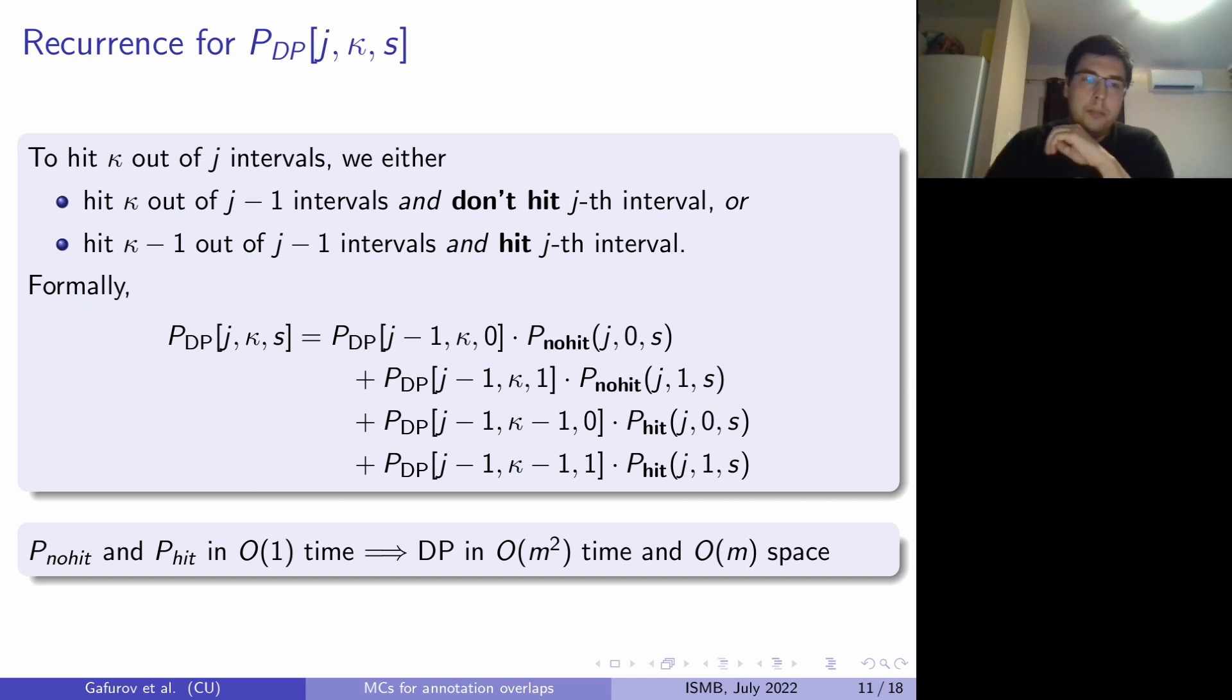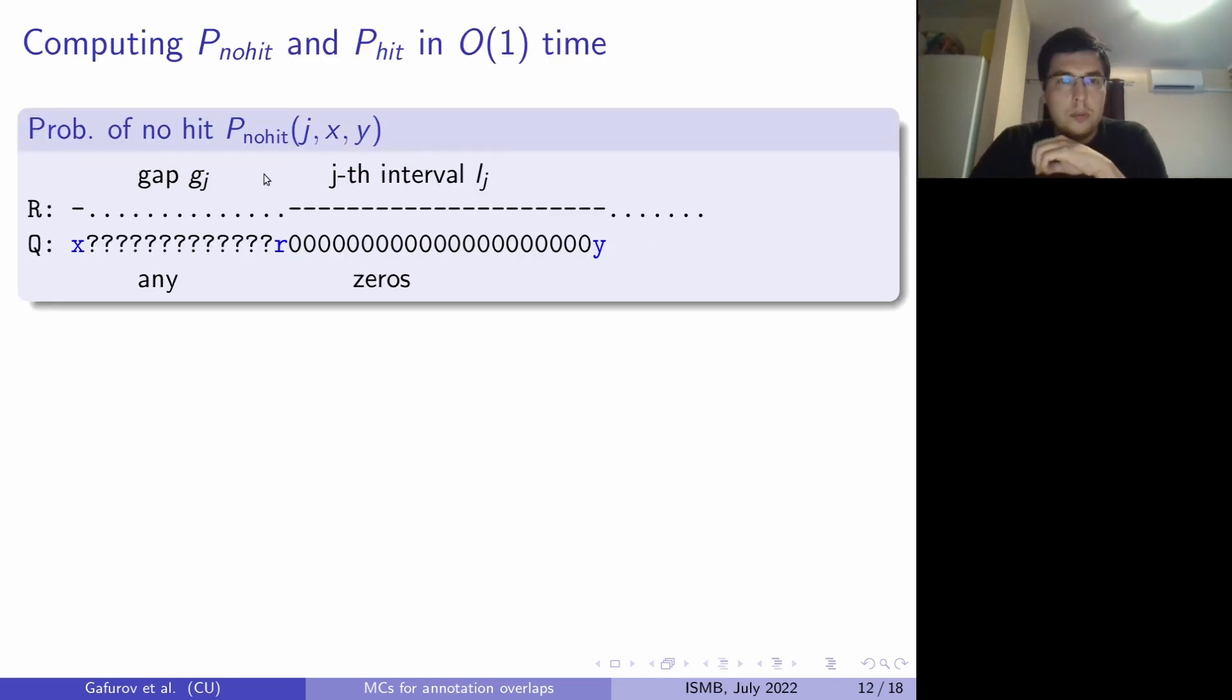So let's talk about probability of not hitting Jth interval. So probability of not hitting for J, X, and Y means that we are interested in the probability of starting at state X, generate states up until the end of Jth interval, finish at state Y, and not hit the Jth interval. So any sequence of states will be generated, can have anything in the gap between the intervals, so there could be anything. But as we don't want to hit that interval, here should be only zeros.